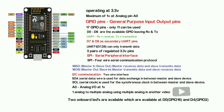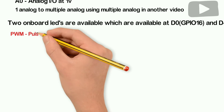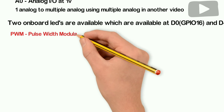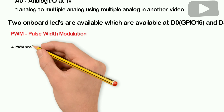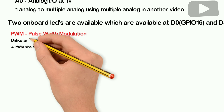In NodeMCU, pin numbering defaults to the NodeMCU numbering. When you refer to a pin like D7, it maps to a corresponding GPIO number. This is one of the drawbacks to be aware of when port mentioning and programming — the GPIO pin mapping must be correct. For PWM, there are 4 to 5 PWM pins, including GPIO4 and GPIO15.